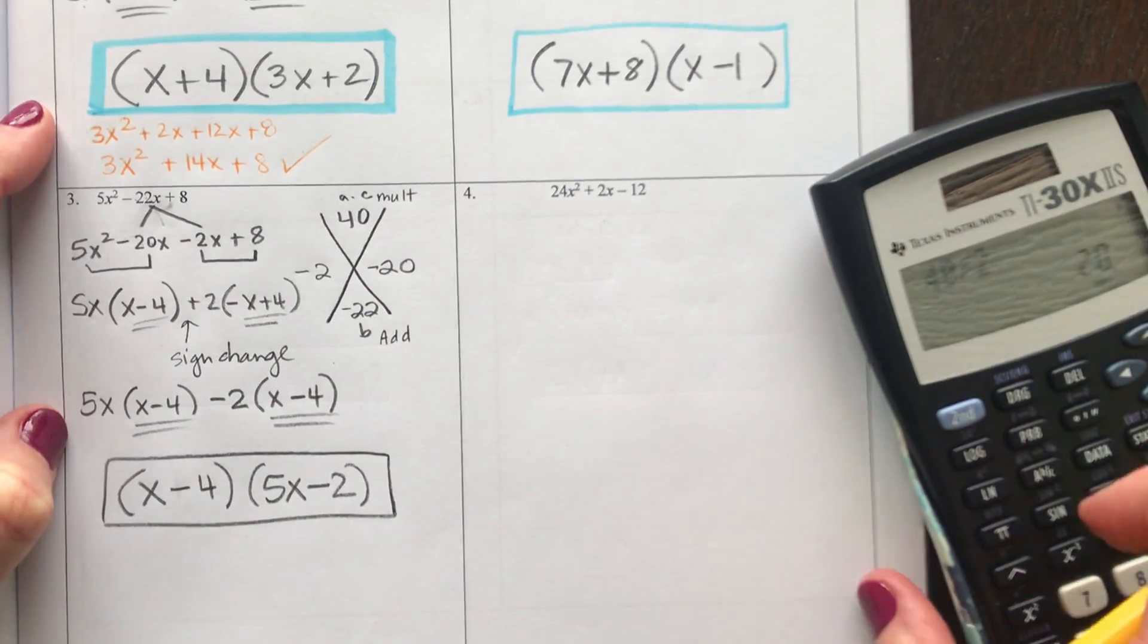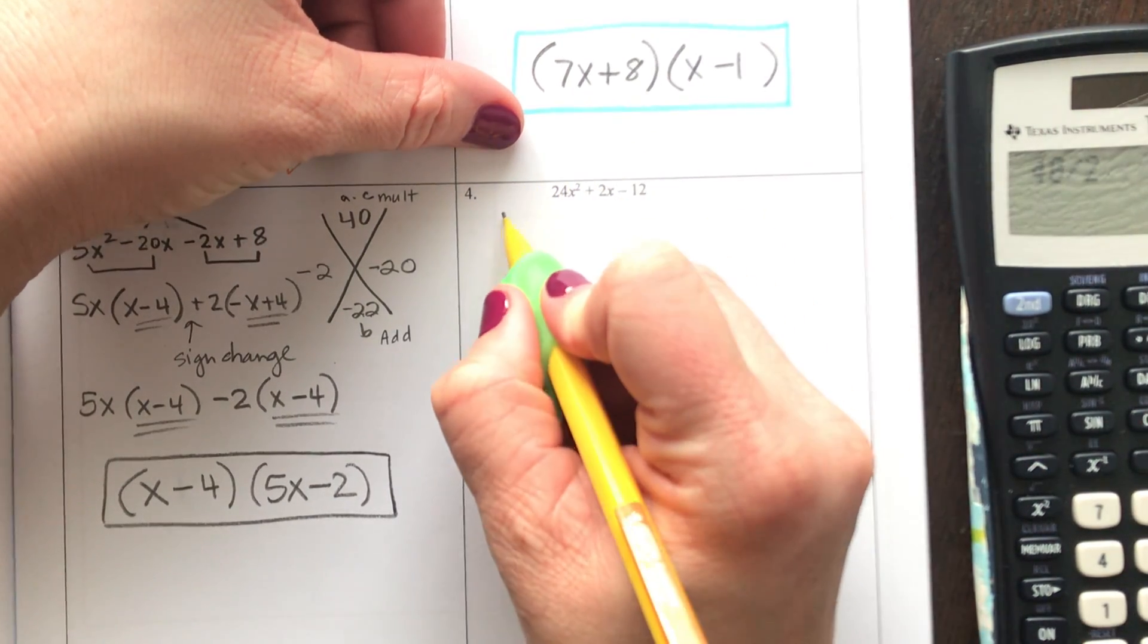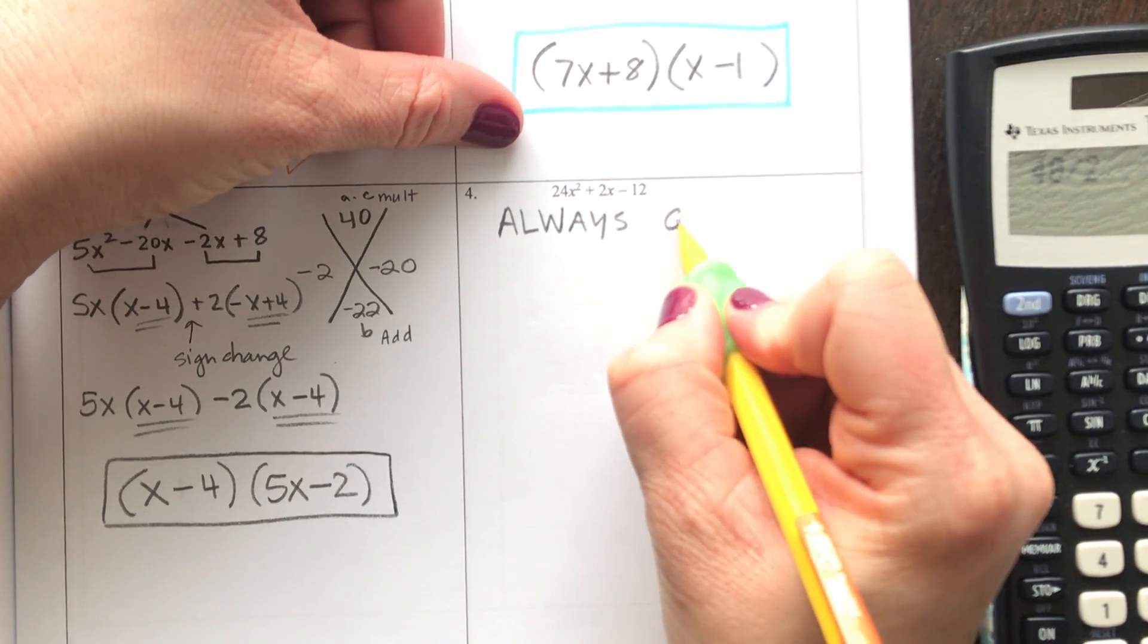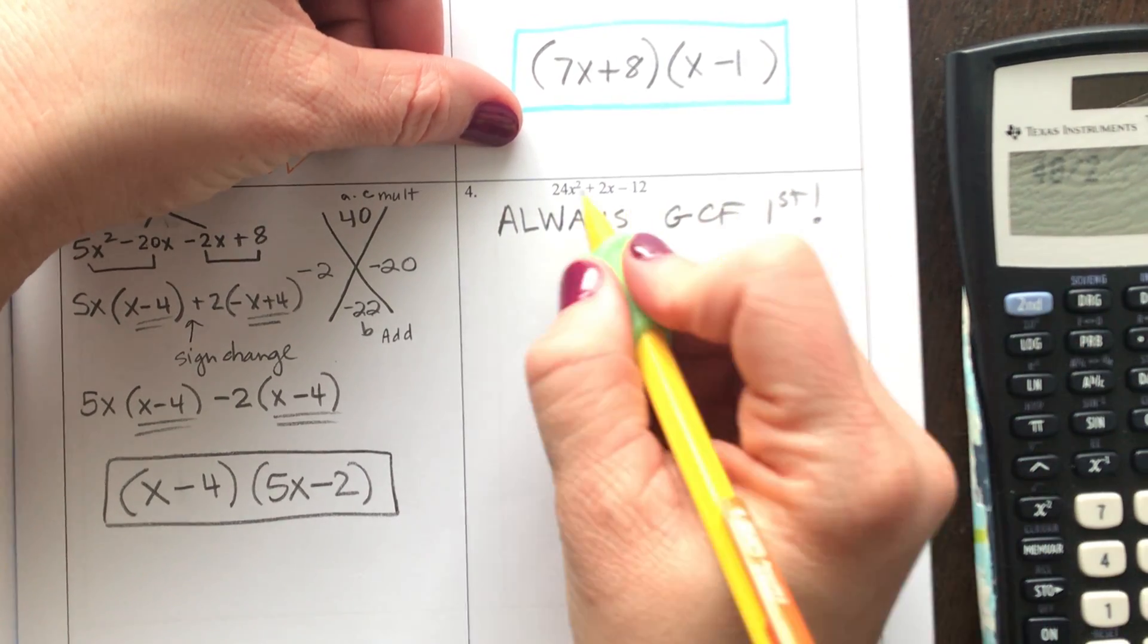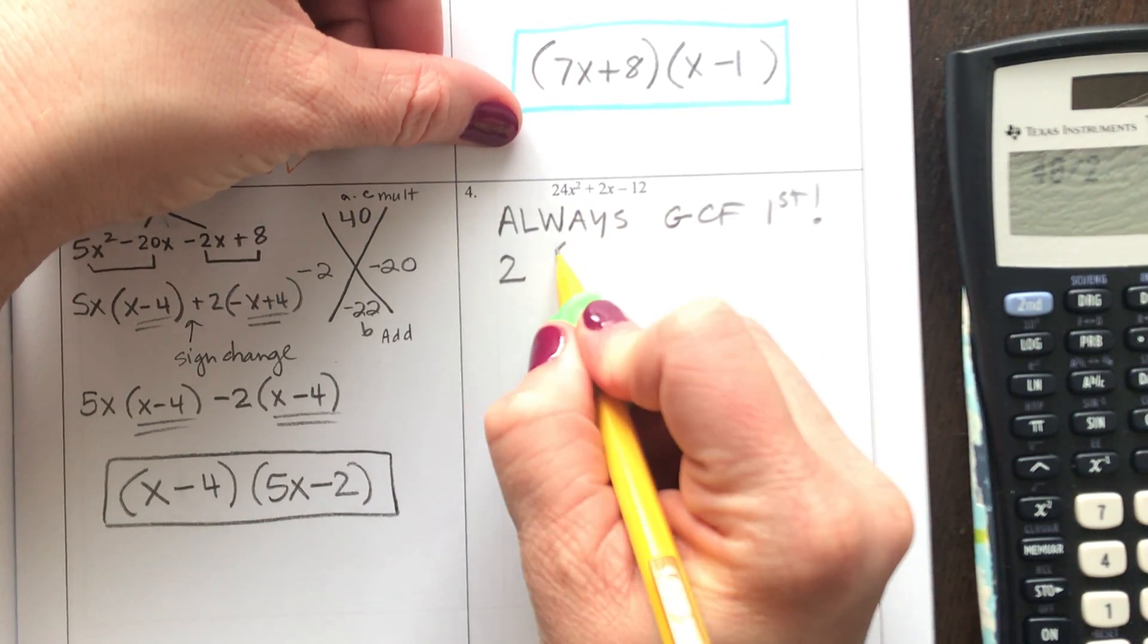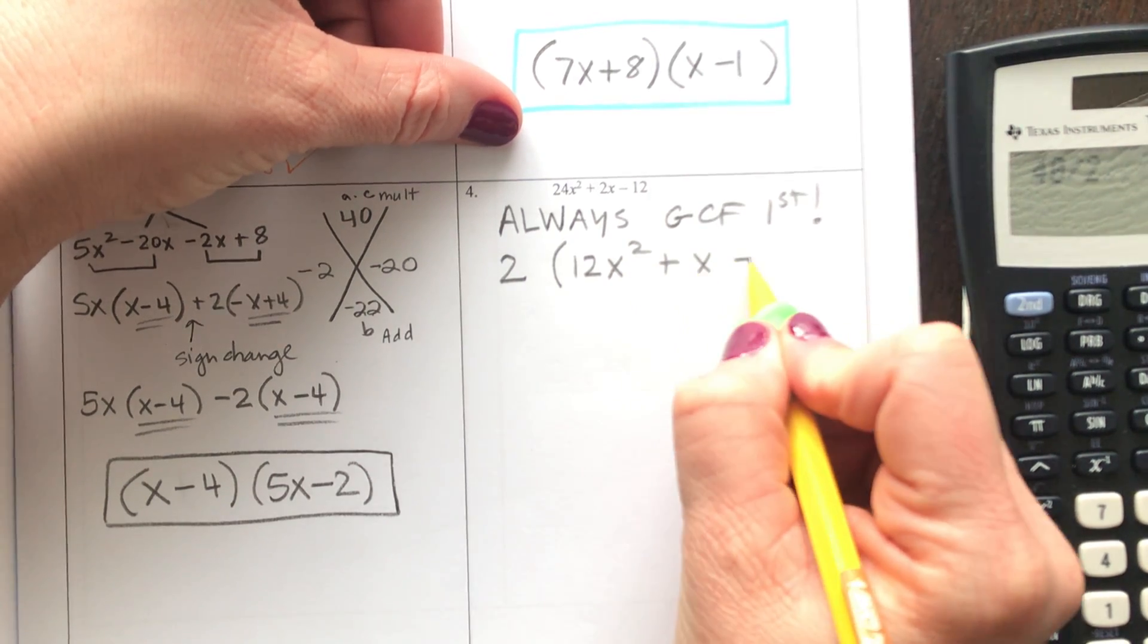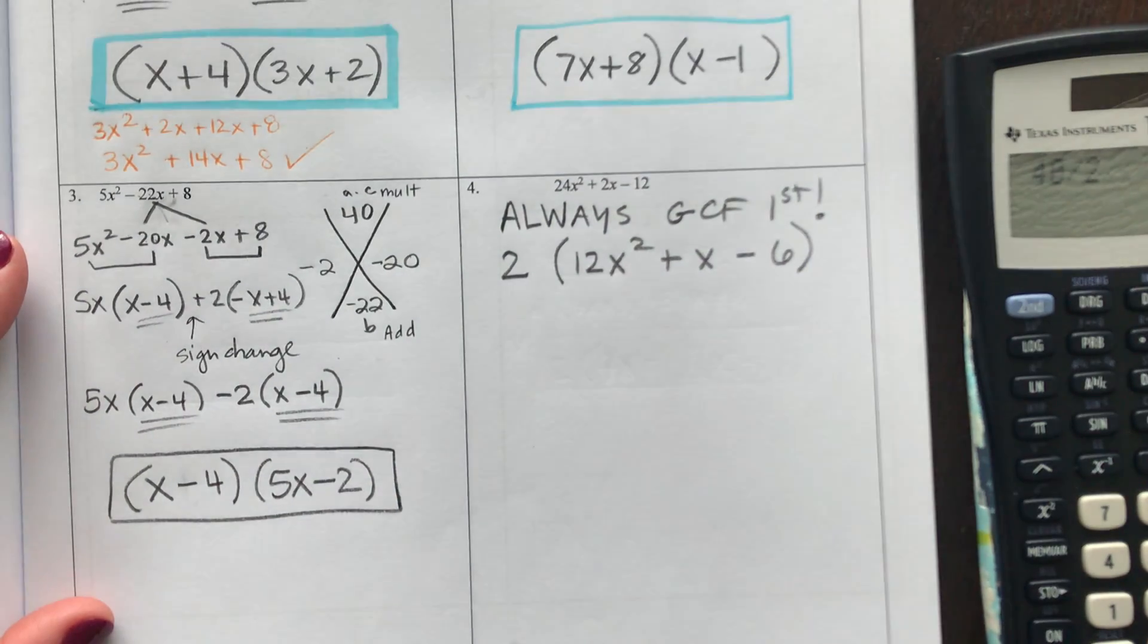Here's our last one. I notice right away that all of my terms are even. You always have to factor out your GCF first. Always. So I'm going to factor out a 2 first. So 12x² + x - 6.